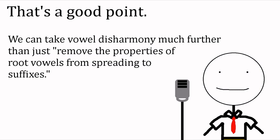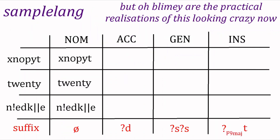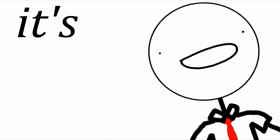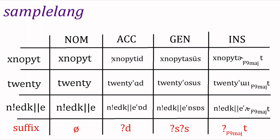So what if each word comes with the vowels in its endings uniquely pre-specified as part of its lexical entry? Let's look at our words again and do that. It's sample time. Let Knoppet's endings for accusative, genitive, and instrumental be EED, ASUS, and ERT. Twenty's are AWD, OSUS, and MEET. And the third word's are AWD, ASUS, and ERT.